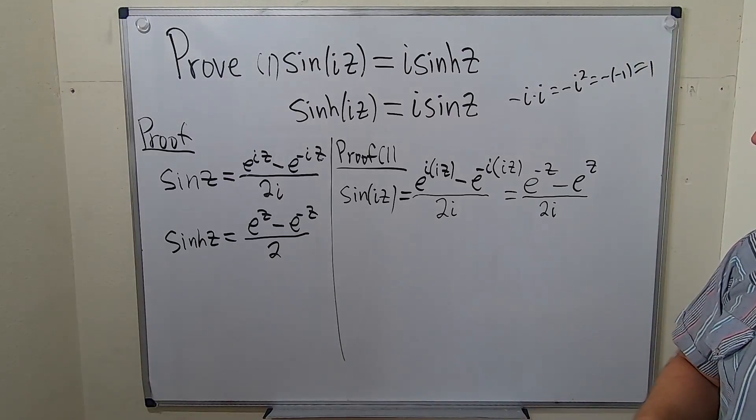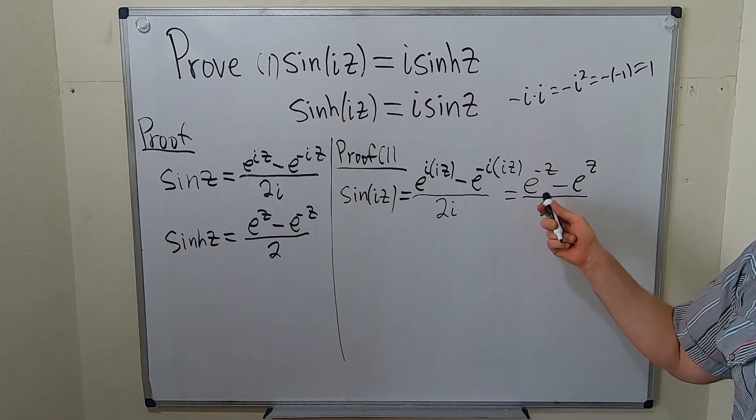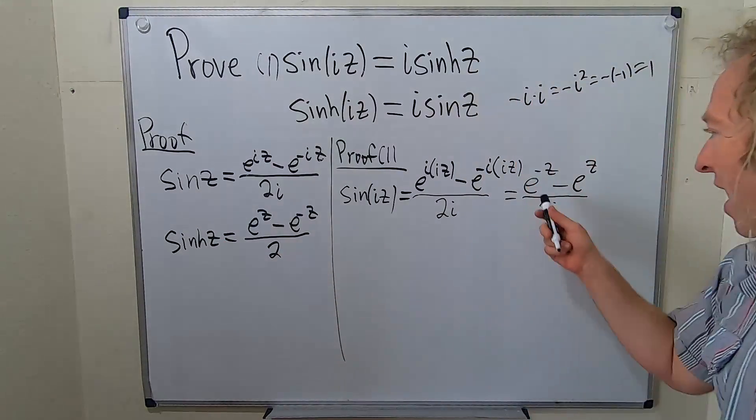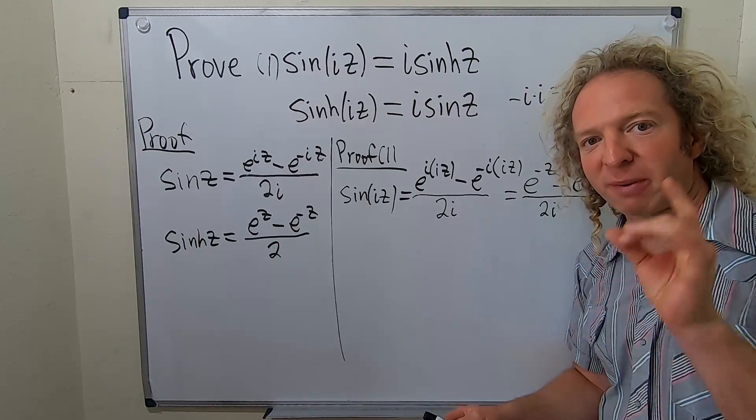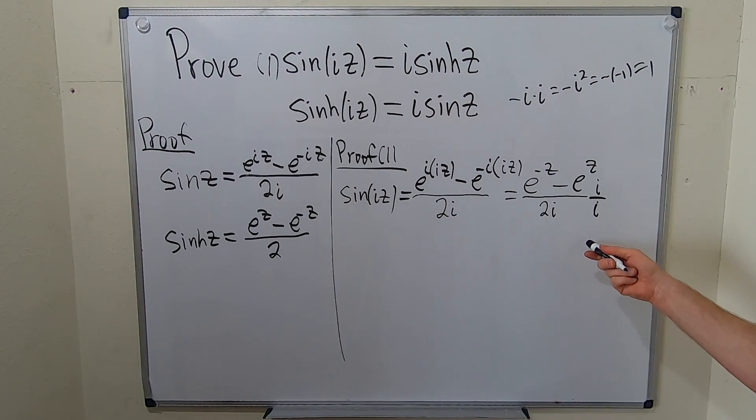Okay, so let's pause here for a moment. What are we trying to show? We're trying to show that this is equal to i sinh z. So you'll notice that sinh z doesn't have an i there. So what we have to do is manipulate this. So we have to get rid of this i. So to do that, we have to multiply by 1 in a clever way. Watch this. I'm going to multiply by i over i.